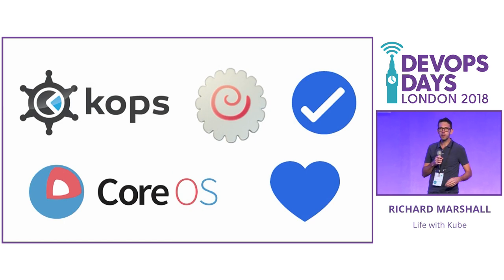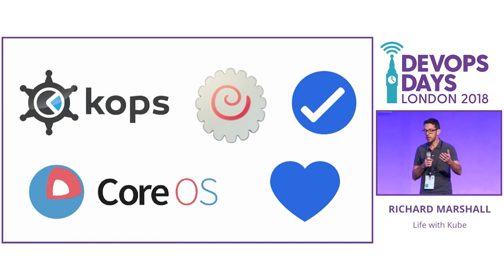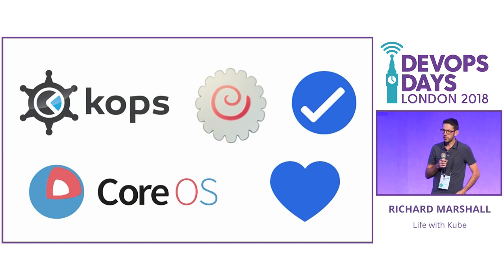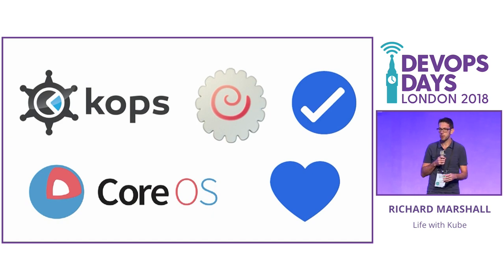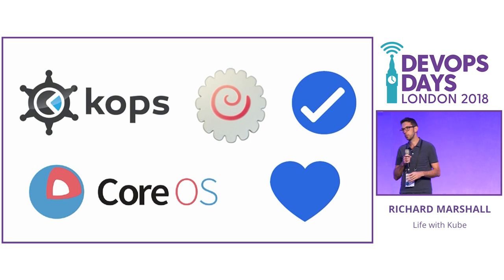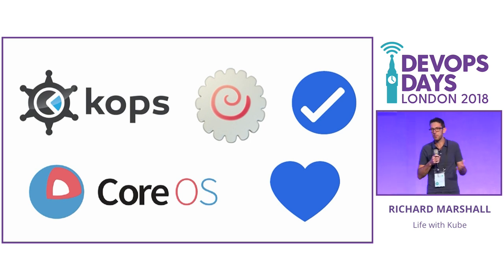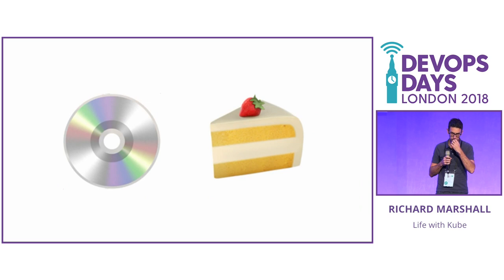First of all, we build Kubernetes using COPs with Debian, and I'm a big fan of Debian. But what we've learned is we'd actually rather be building Kubernetes with CoreOS. It's just much better suited to that kind of container runtime.